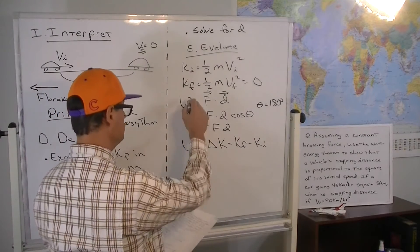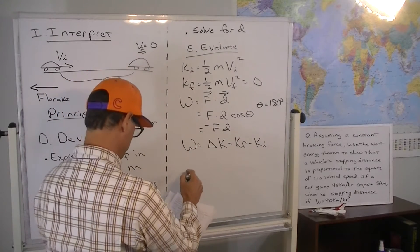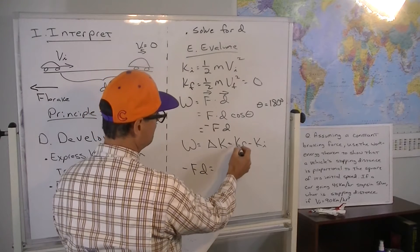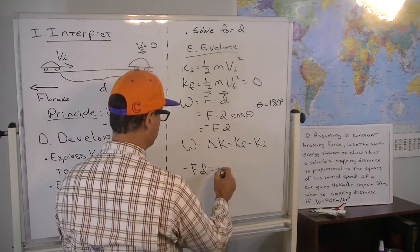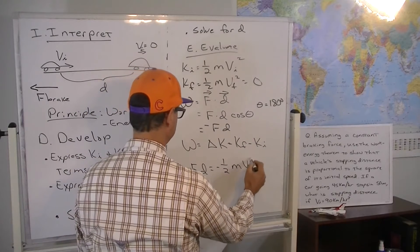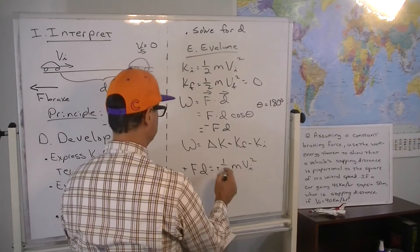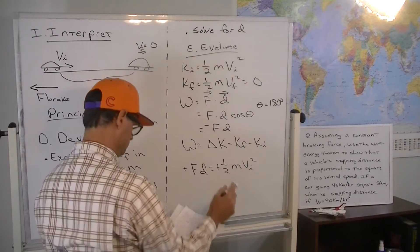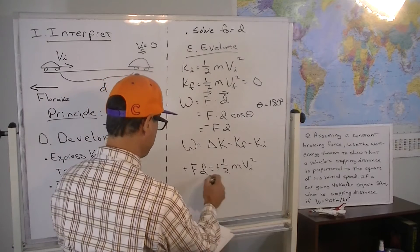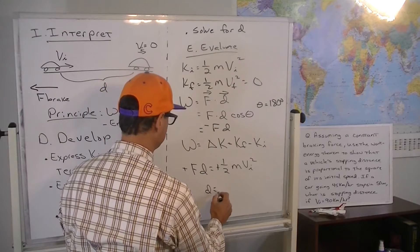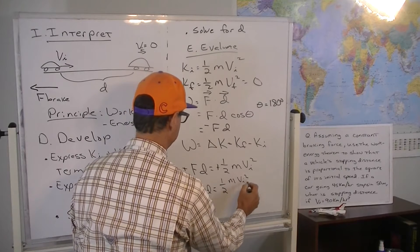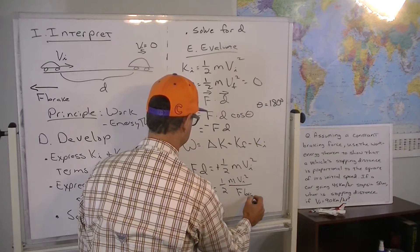So, setting these two works equal to each other. Negative force times displacement is equal to, well, k final is zero so it's just negative k initial minus one half m v initial squared. Negative signs cancel out. So, now the stopping distance dividing both sides by the braking force is one half m v initial squared divided by the braking force.